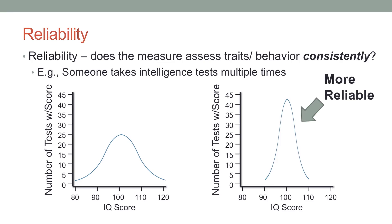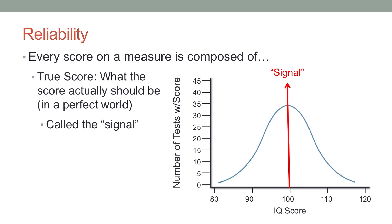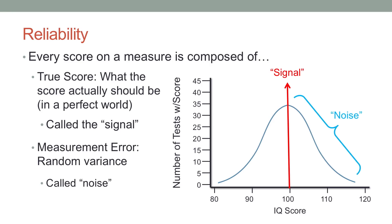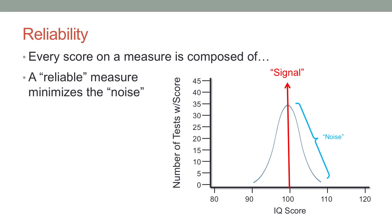A scale that yields a tight distribution from multiple testings is clearly more reliable — it's hitting right around 100 most of the time. Whenever you're testing someone, what you're really interested in is their true score: what would their score be in a perfect world where you could perfectly measure that variable? It could be intelligence, extroversion, prejudice, anything you're trying to measure. But the thing we're always dealing with in the real world is called measurement error, or random variance — sometimes called the noise around the signal. What we want to do as psychologists is to minimize this noise as much as possible so that most of the time when someone takes a test, we're getting something right around their true score.